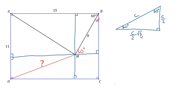And the leg that's opposite the 60-degree angle is C over 2 times the square root of 3.